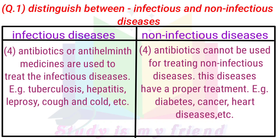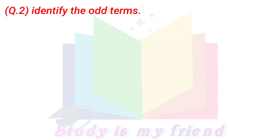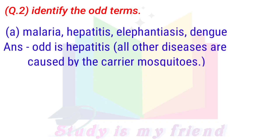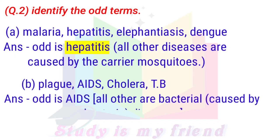Question 2: Identify the odd one out. A. Malaria, Hepatitis, Elephantiasis, Dengue. Answer: Odd one out is Hepatitis; all other diseases are caused by carrier mosquitoes. B. Phlegs, AIDS, Cholera, TB. Answer: Odd one out is AIDS; all others are bacterial diseases caused by bacteria.